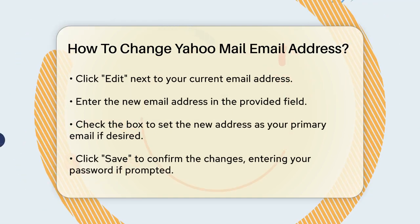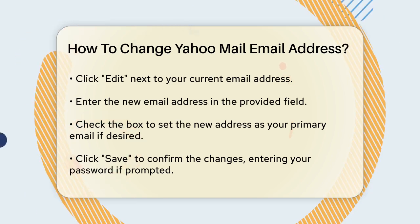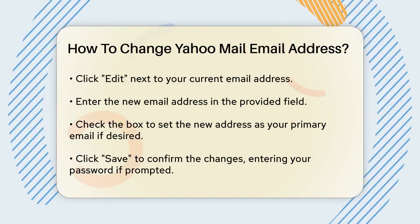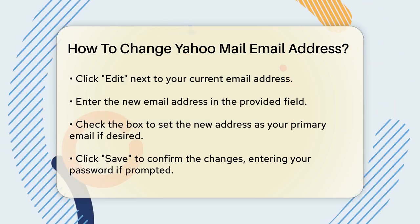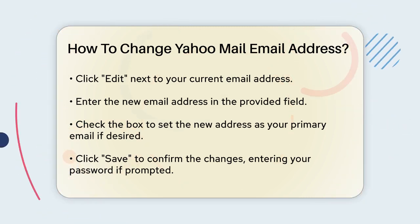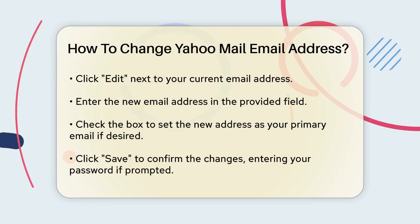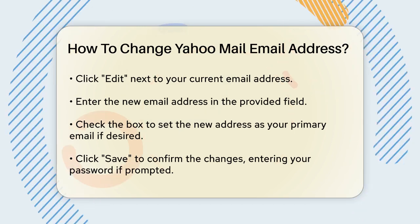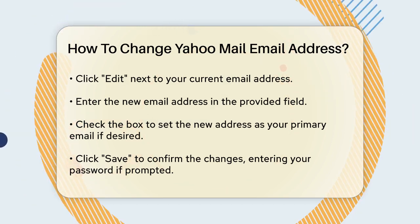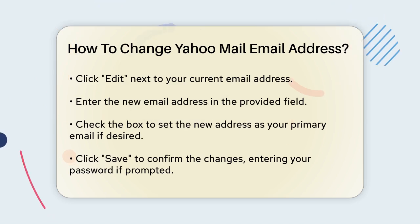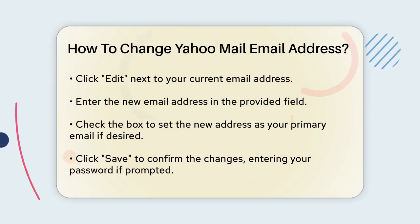Click Edit next to your current email address. This will allow you to enter a new email address in the Email field. Make sure to type in the new address correctly, and if you want this new address to be your primary email, check the box that says Set as Primary Email. After entering the new address, click Save to confirm the changes. You might be asked to enter your password and click Confirm to validate the change.